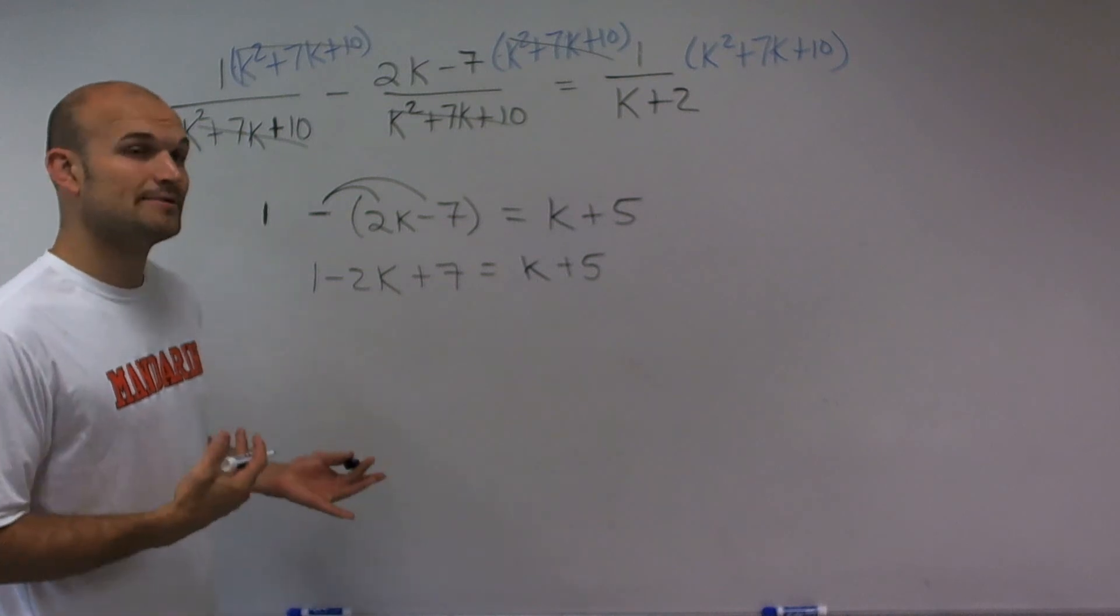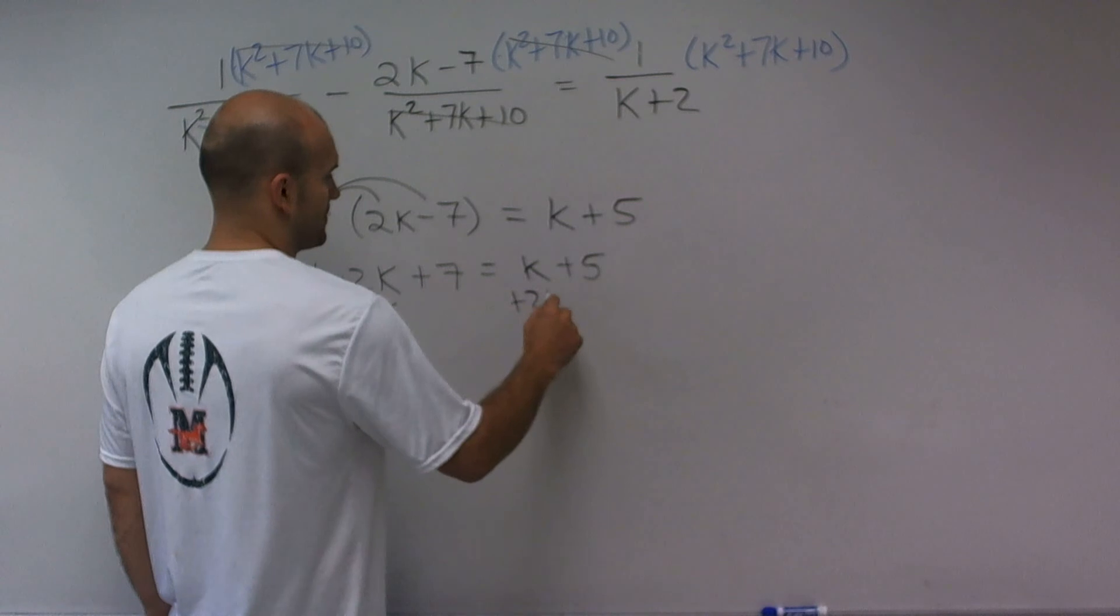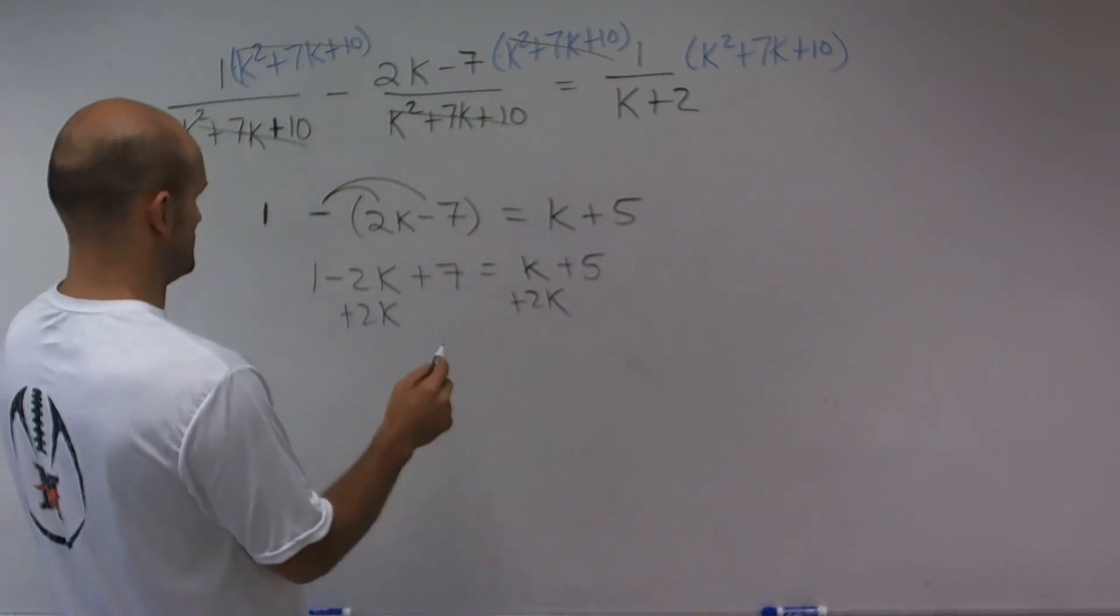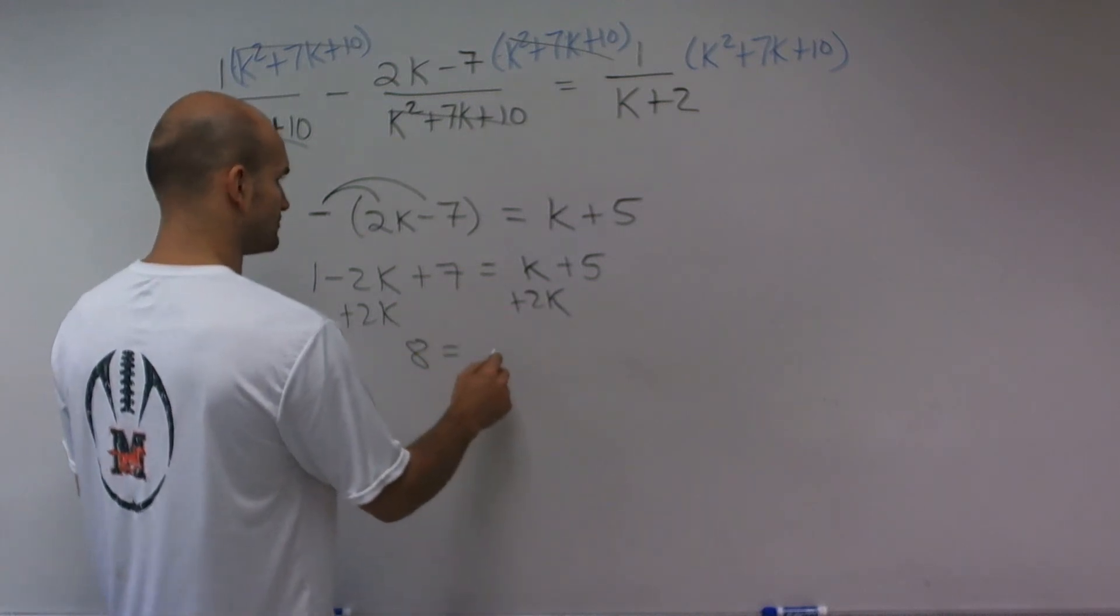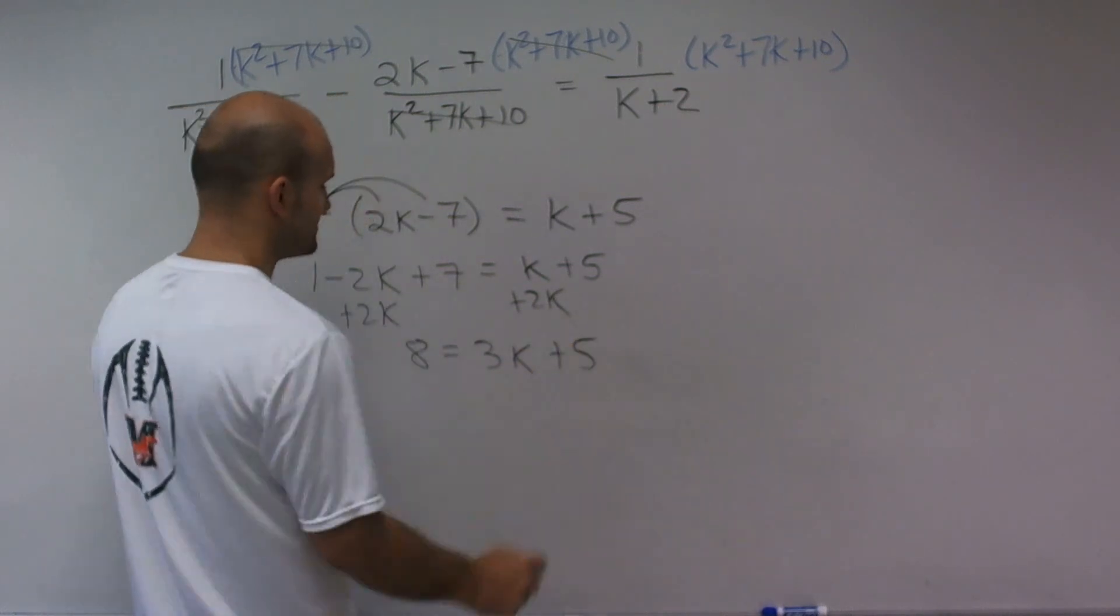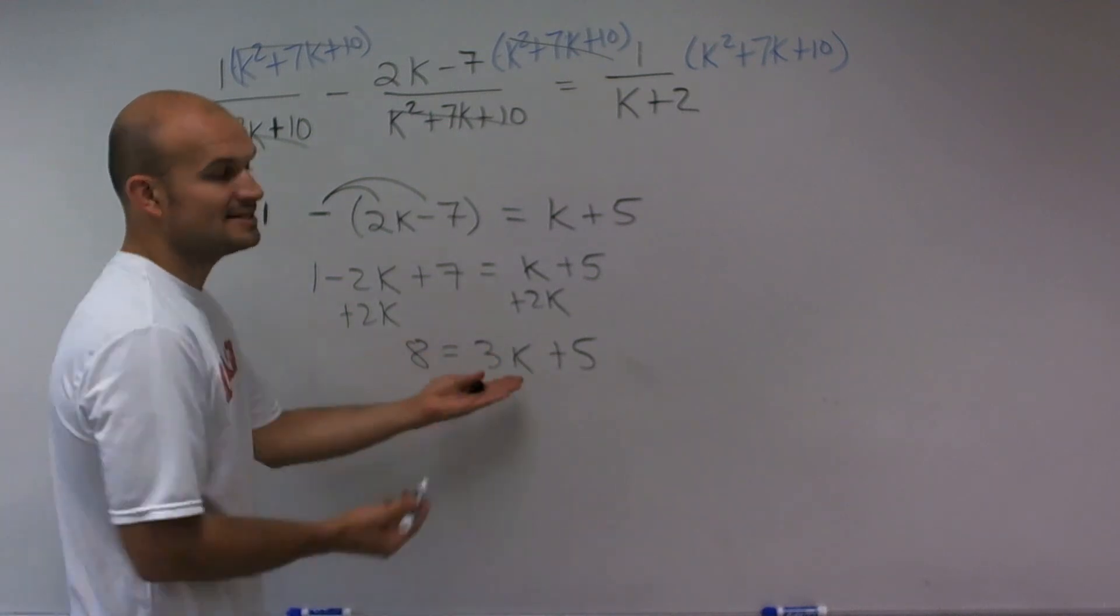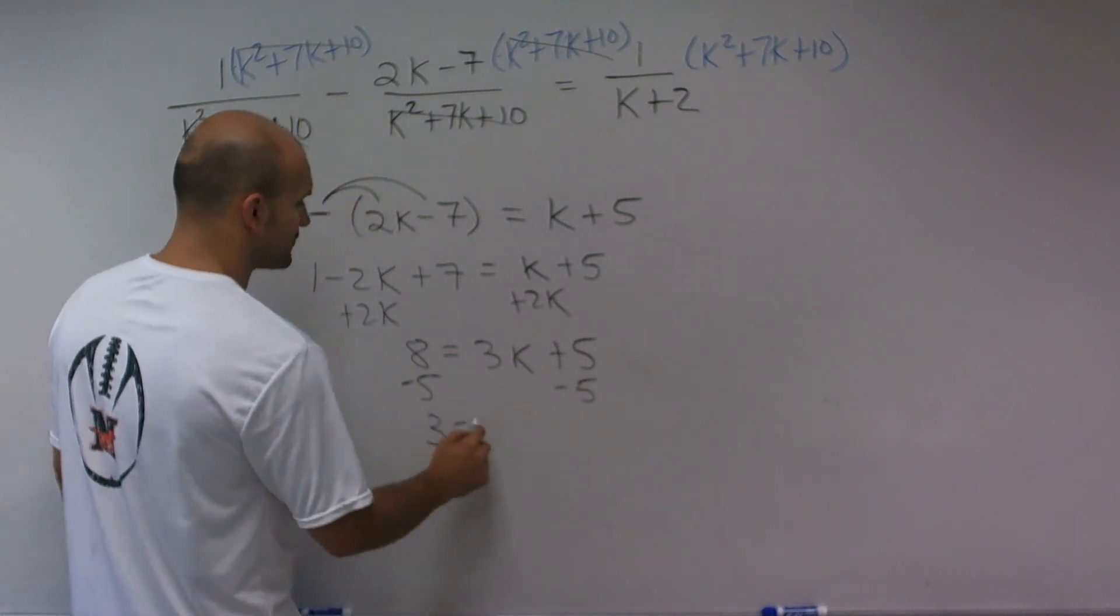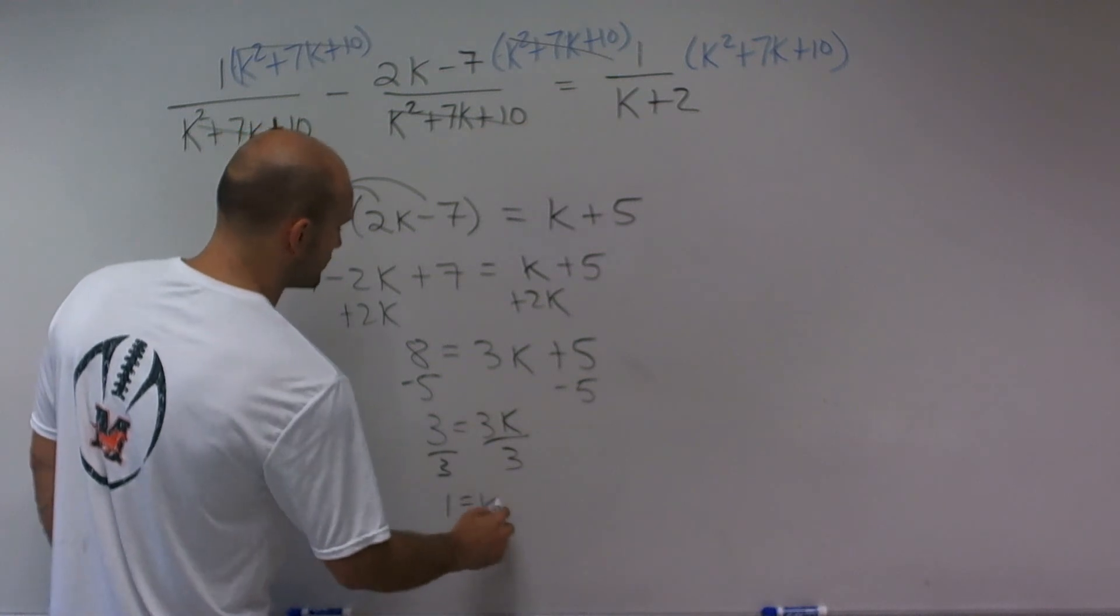Now, to solve for my variable, I need to get my variable on the same side. So I'll add 2k to both sides, and therefore I have 1 plus 7 is going to be 8 equals 3k plus 5. Now, the next step I'm going to do is now I just need to isolate my variable. So I'm going to undo my steps by subtracting 5 on both sides. I get 3 equals 3k. Divide by 3 on both sides, and I get 1 equals k.